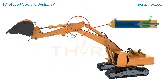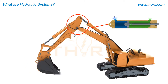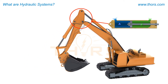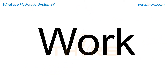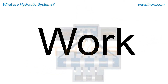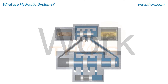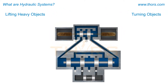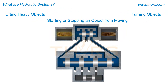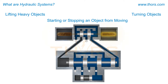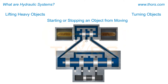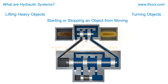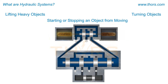Overall, the main purpose of a hydraulic system is to perform some type of work. Whether the work performed is lifting heavy objects, turning objects, or starting or stopping an object from moving, hydraulic systems are commonly used because of their reliability and capabilities of providing large amounts of force.